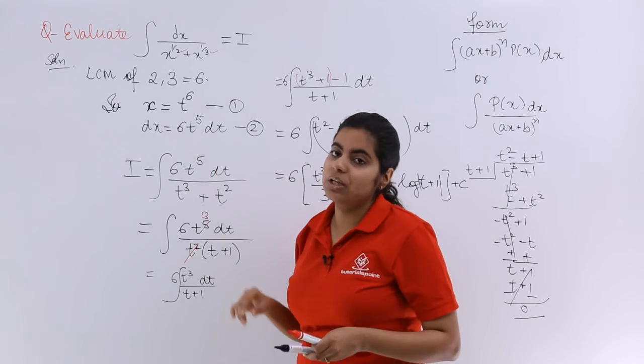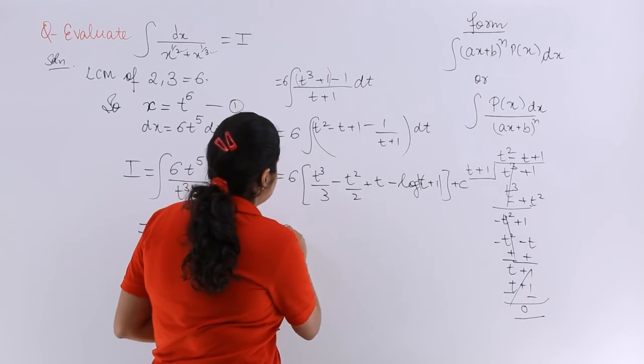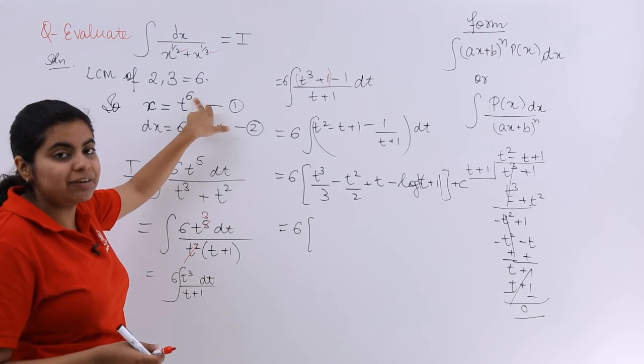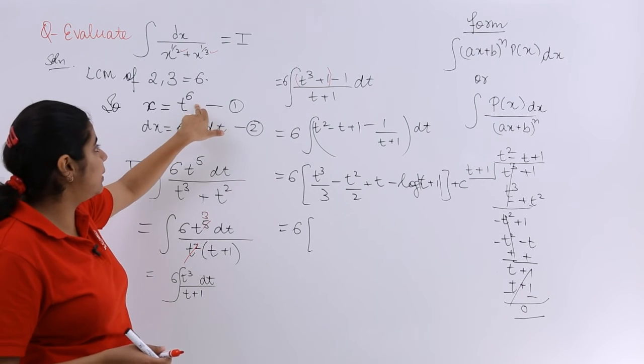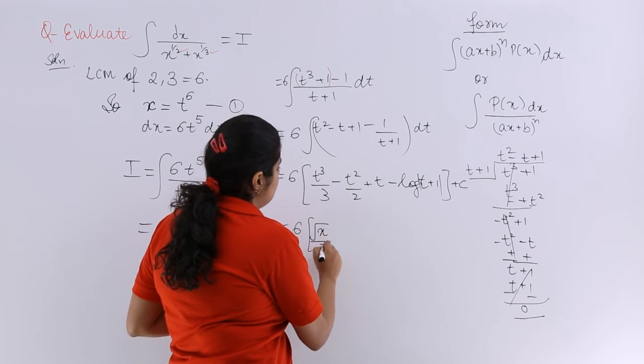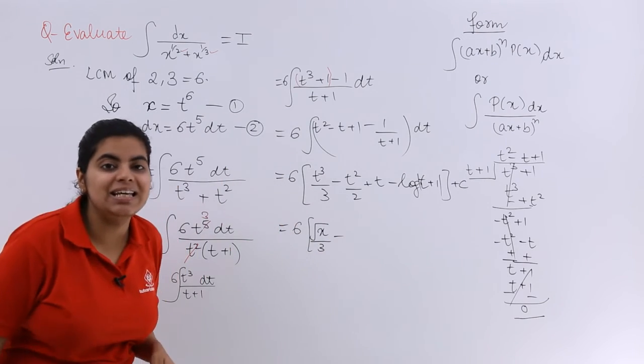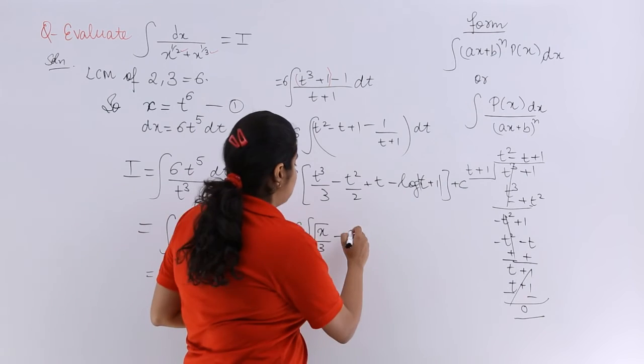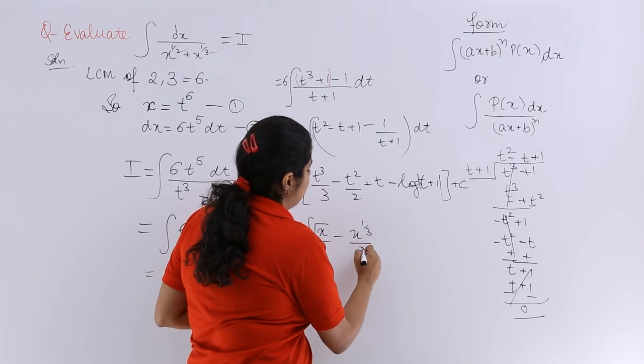So it becomes 6t cube. t cube would be what? It will be nothing but obtained when I divide it by 2. So here also it should be divided by 2. So it is root x by 3. Minus t square. Divide by 3 here. So here also divide by 3. It becomes x raised to the power 1 by 3 upon 2.